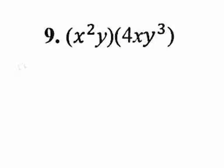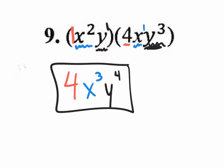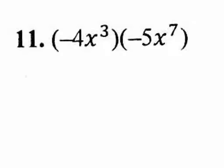Number 9: there's a coefficient of 4 on the second set of parentheses and a coefficient of 1 on the first, so 1 times 4 is just 4. For the X's, we have X squared and X to the 1 — add the exponents to get X to the third. Then Y to the 1 times Y to the third: add 1 plus 3 to get Y to the fourth. The answer is 4X to the third Y to the fourth.